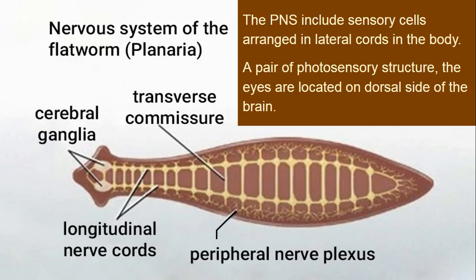The PNS includes the sensory cells arranged in lateral cords in the body. The peripheral nervous system consists of fibers that emerge from the outer side of the nerve cords into the peripheral region. These fibers collectively form a network-like structure, and this network-like structure is called the peripheral nervous system.